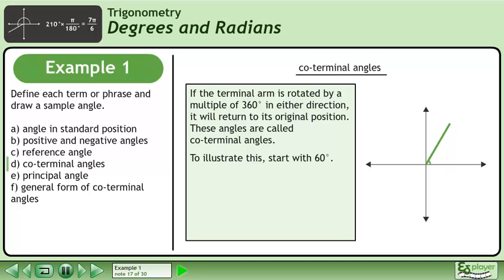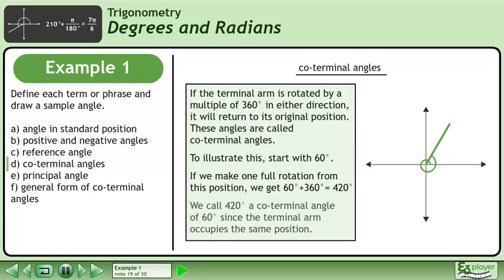To illustrate this, start with 60 degrees. If we make one full rotation from this position, we get 60 degrees plus 360 degrees equals 420 degrees. We call 420 degrees a coterminal angle of 60 degrees since the terminal arm occupies the same position.